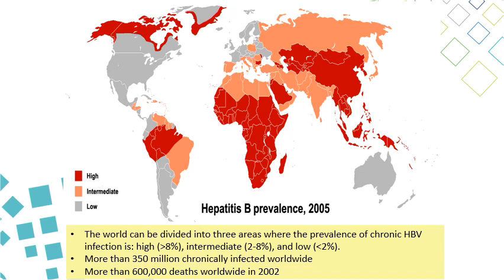This slide shows the burden of hepatitis B around the world. You can differentiate between three different areas: above 8%, intermediate between 2% to 8%, and low less than 2%. It is very high in most African countries and many Asian countries including China, and some South American and South Eastern Asian countries. Very little in North America, Australia, and Western Europe. The Middle East is maybe midway between both.